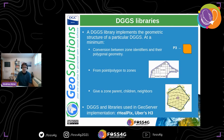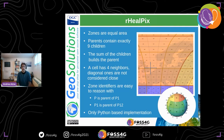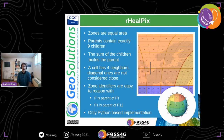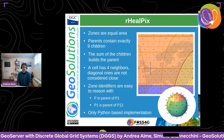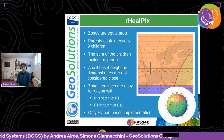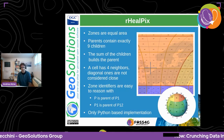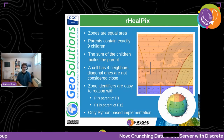rHEALPix is based on a square model. The first partition covers the earth in roughly nine or ten tiles, then they split into nine over and over — each parent contains exactly nine children, so you can sum the children and get the geometry of the parent. Each cell has four neighbors, so the neighborhood is that of a rectangular grid. The zone identifiers are really easy to reason with: P is the parent of P1, P1 is the parent of P12, and so on.